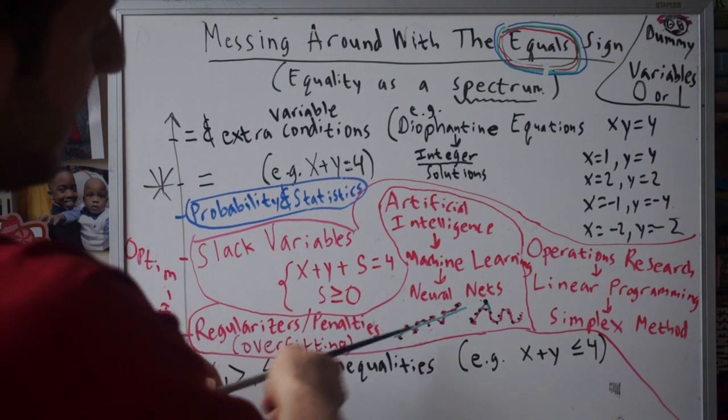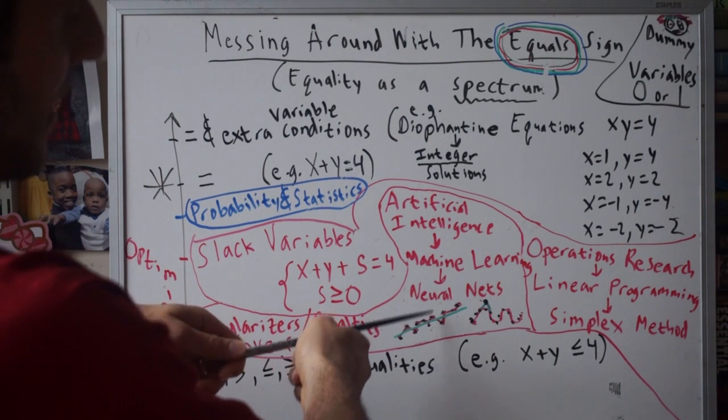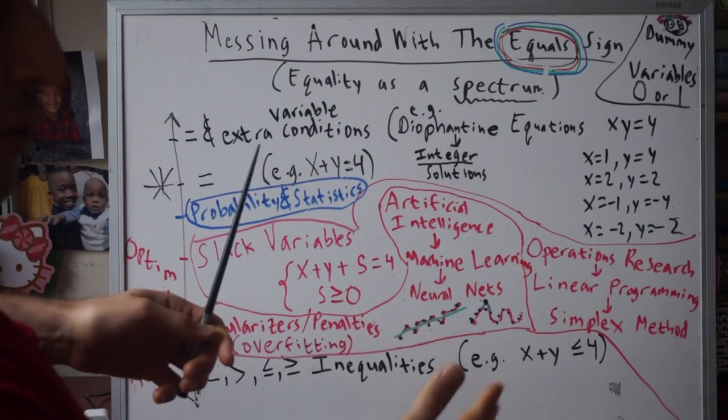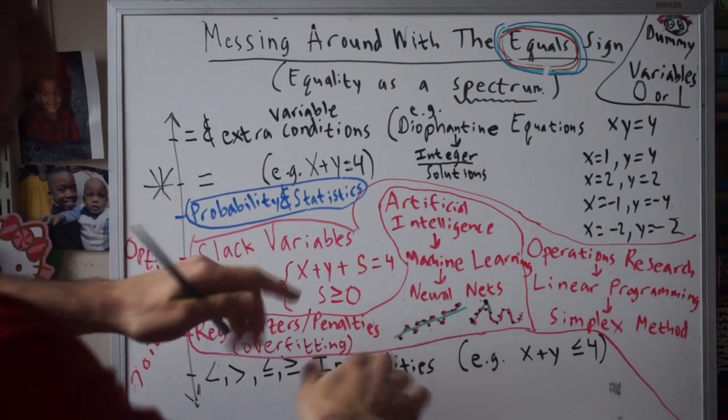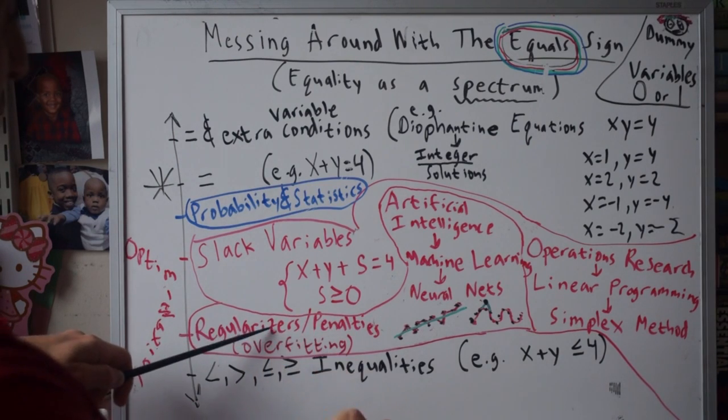If we connect the dots, we haven't learned too much because we haven't extracted this nice relationship. The penalties or these regularizers are these little terms we can add to our optimizations to prevent us from overfitting.